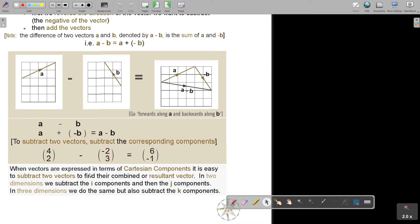When vectors are expressed in terms of Cartesian components, it's easy to subtract two vectors to find their combined or resultant vector. In two dimensions, we subtract the I components and then the J components. In three dimensions, we do the same, but also subtract the K components.